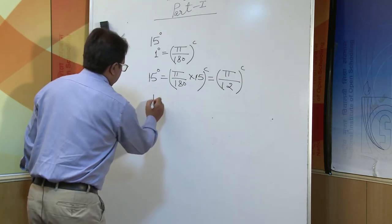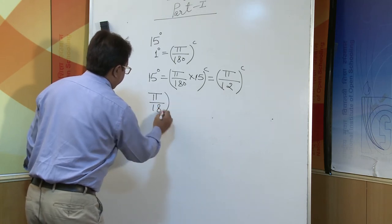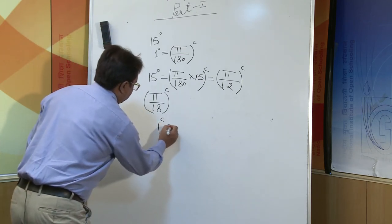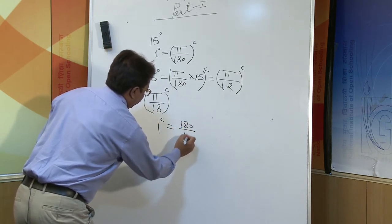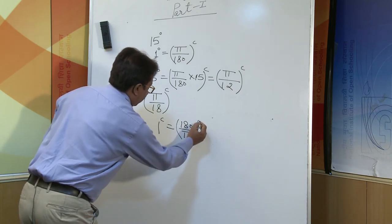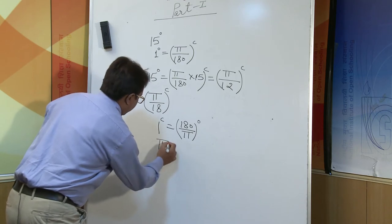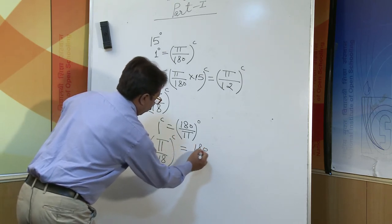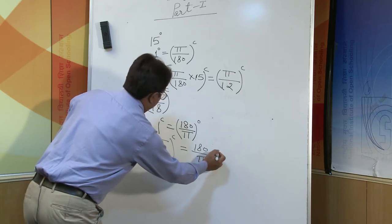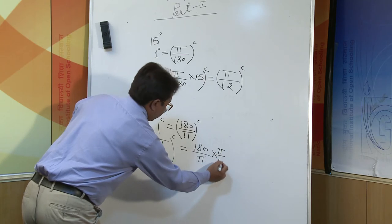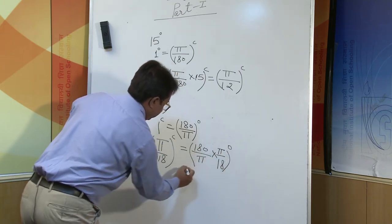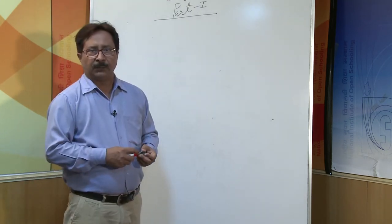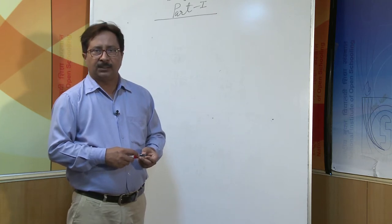Likewise, if we need to convert π upon eighteen radians into degrees, we know one radian equals one-eighty upon π degrees. So π upon eighteen radians becomes π upon eighteen times one-eighty upon π, which gives ten degrees.